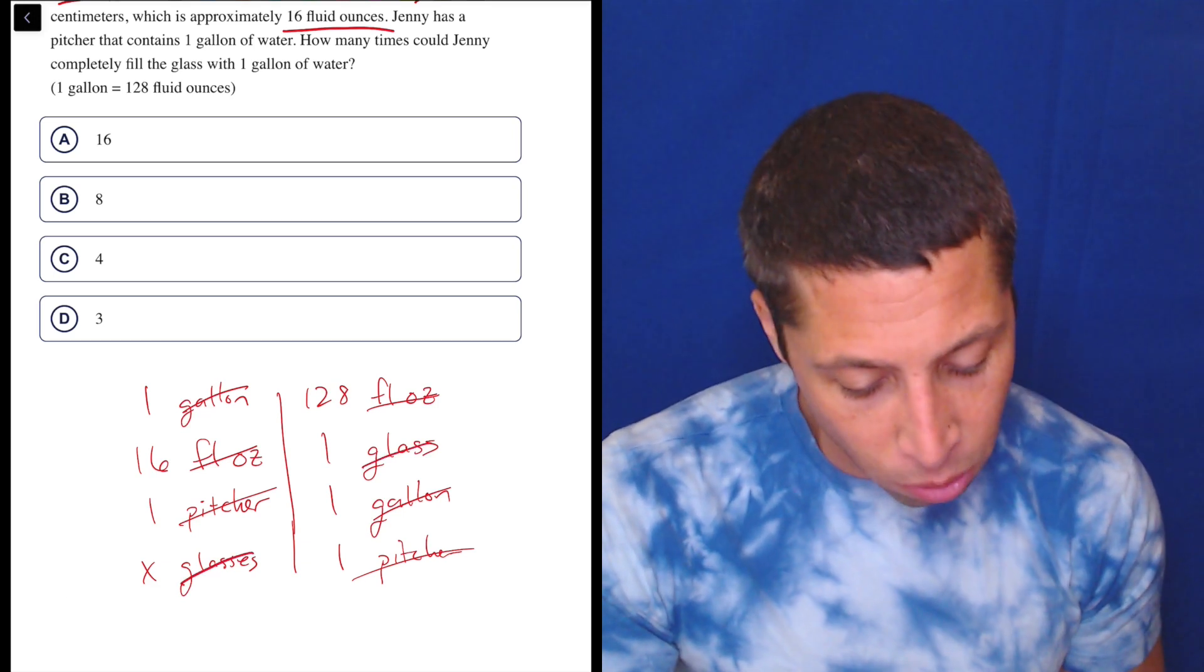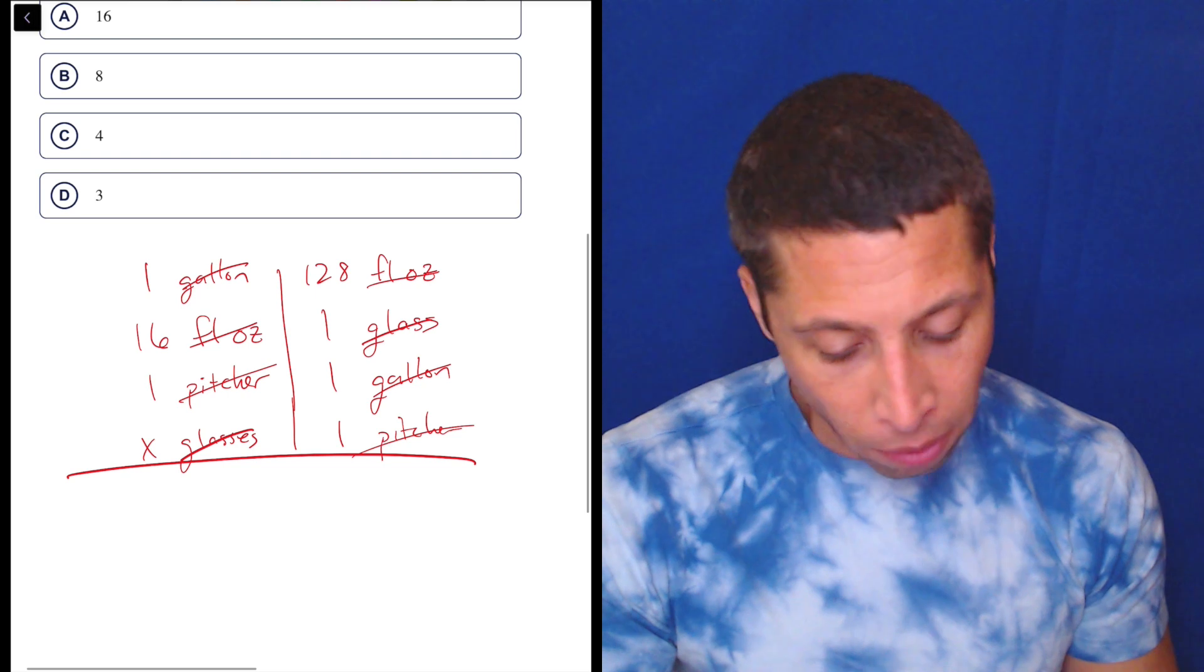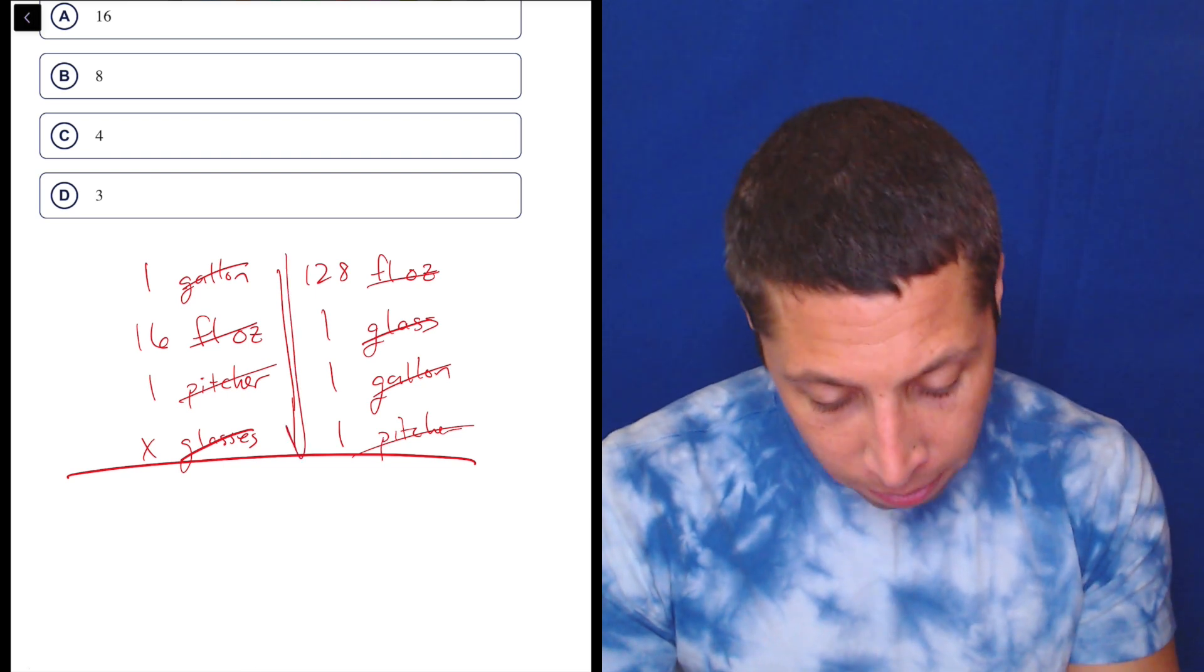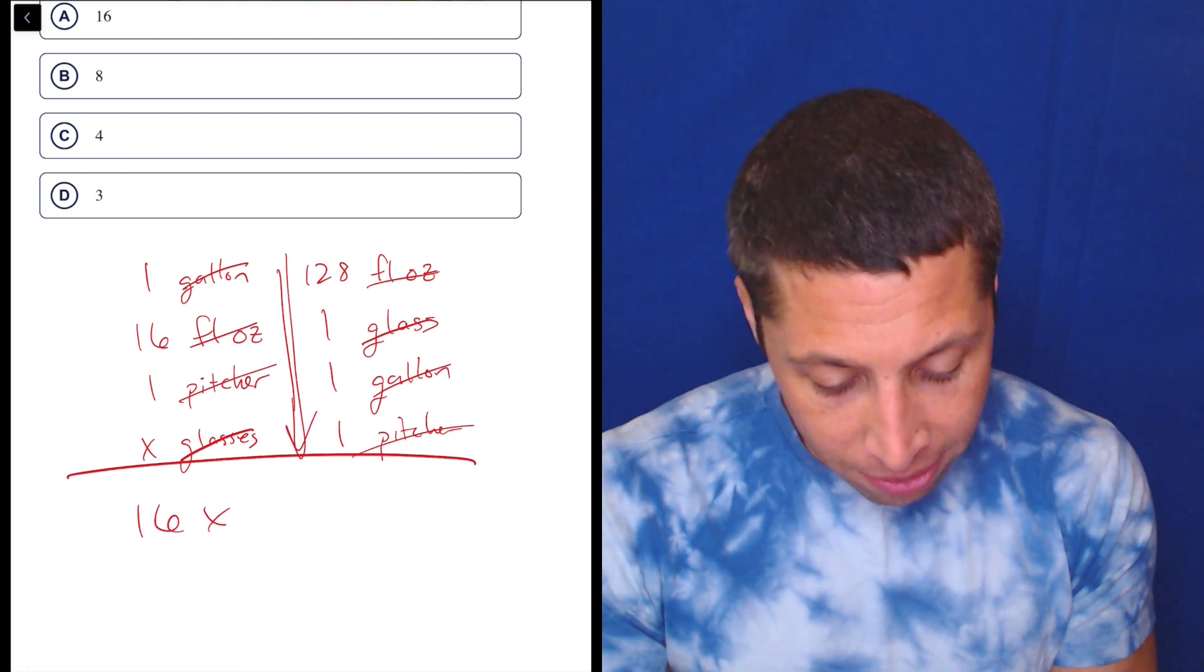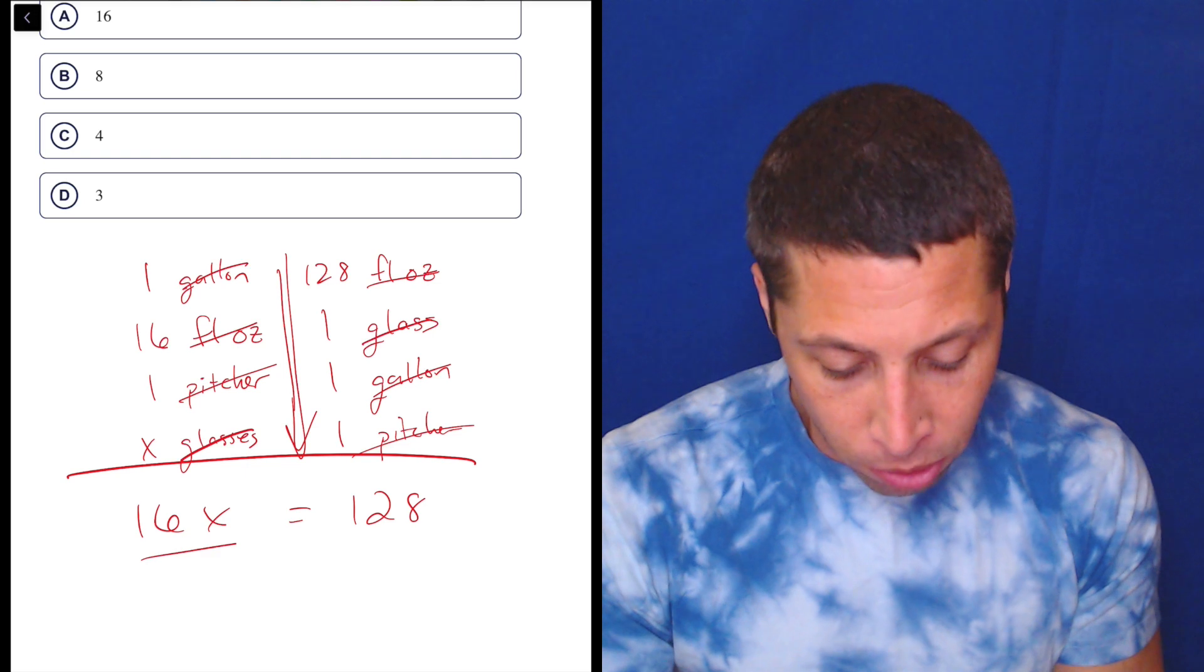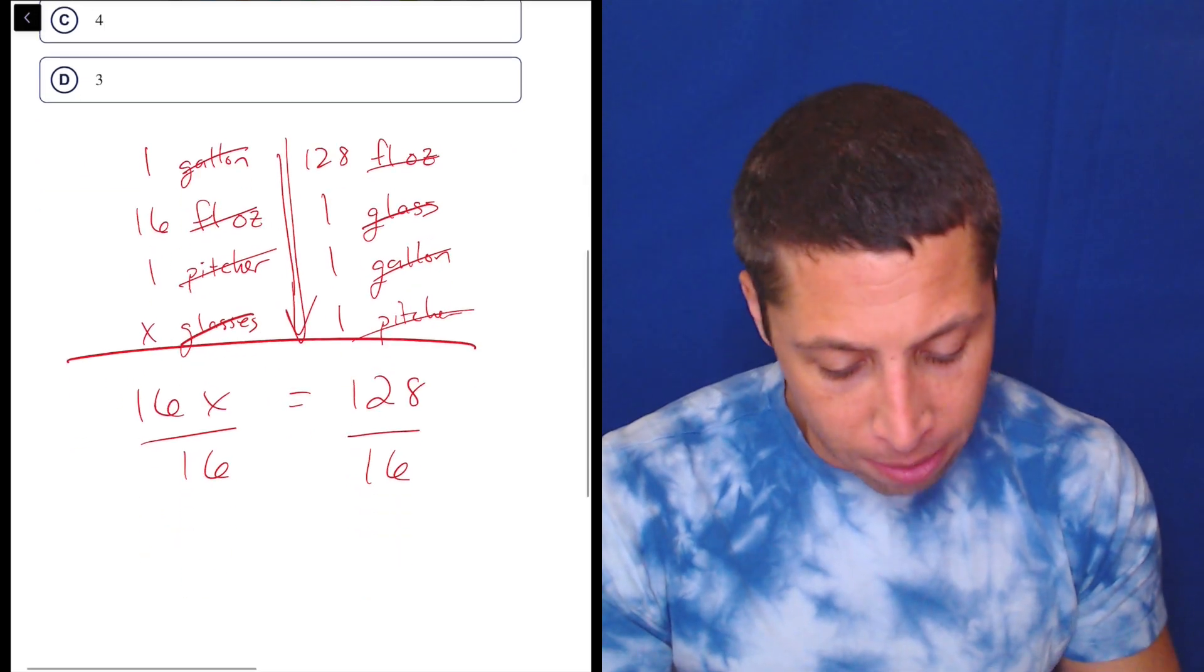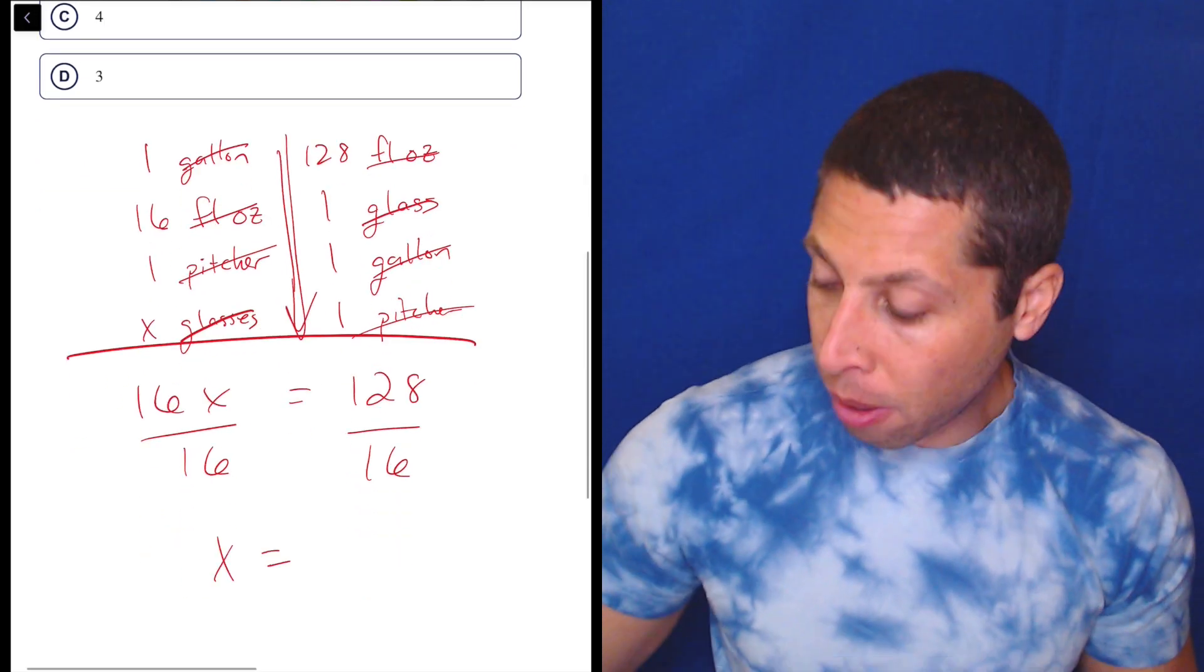Now the glasses are gone. So when we solve this thing, we're just going to solve directly for what we want. Go down the line and multiply. So this is 16X and then this is 128. So divide by 16, and X is equal to, I believe that's eight.